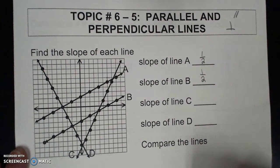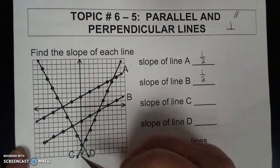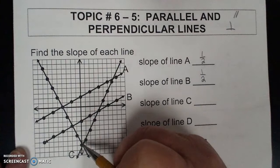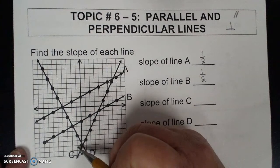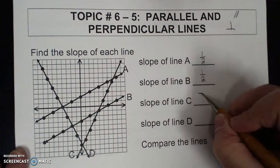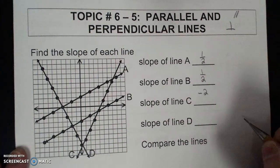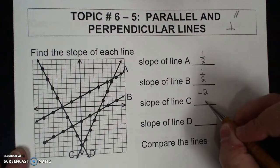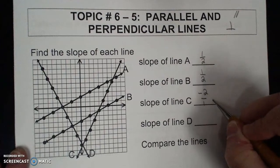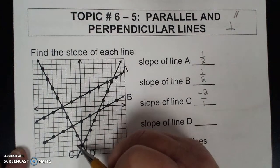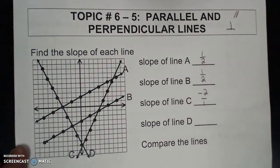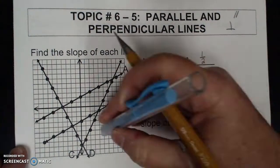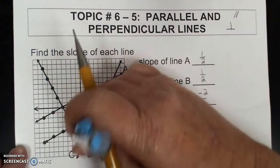Slope of C — actually, be careful. I looked at the wrong line. That was D, not C.